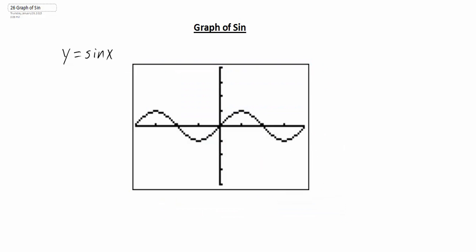What we're seeing here with this particular graph — you will notice that if we start over here at the far left, it goes up, down, and back, and then at this point it starts to repeat. Or if we start at the origin, the graph will go up, down, and then once we get to the far right, the graph is going to continue to repeat, going up and down. This is what we call an oscillating function, because it's going up and down, or a periodic function, because after a certain period of time the graph is going to continue to repeat itself.